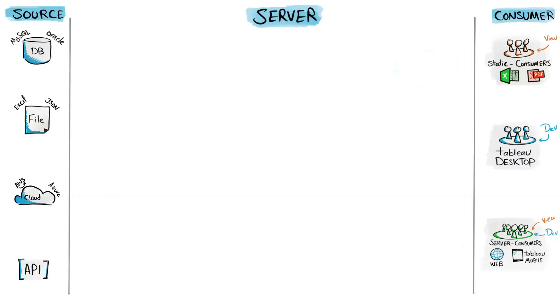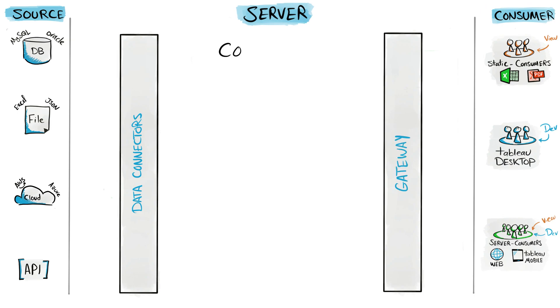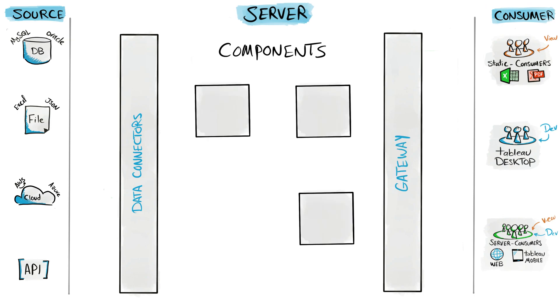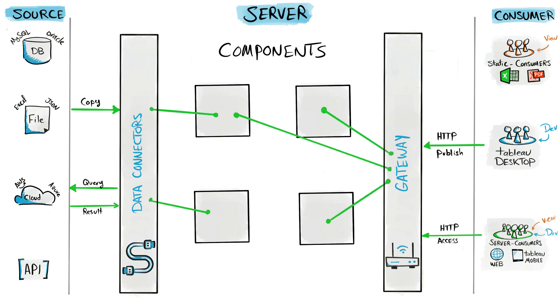The server layer contains mainly three parts: two interfaces on the left and right, and in the middle a bunch of server components. The left interface is the data connectors — they connect external source systems to Tableau Server components. On the right side we have the gateway, which receives requests from different clients and connects them to Tableau Server components.